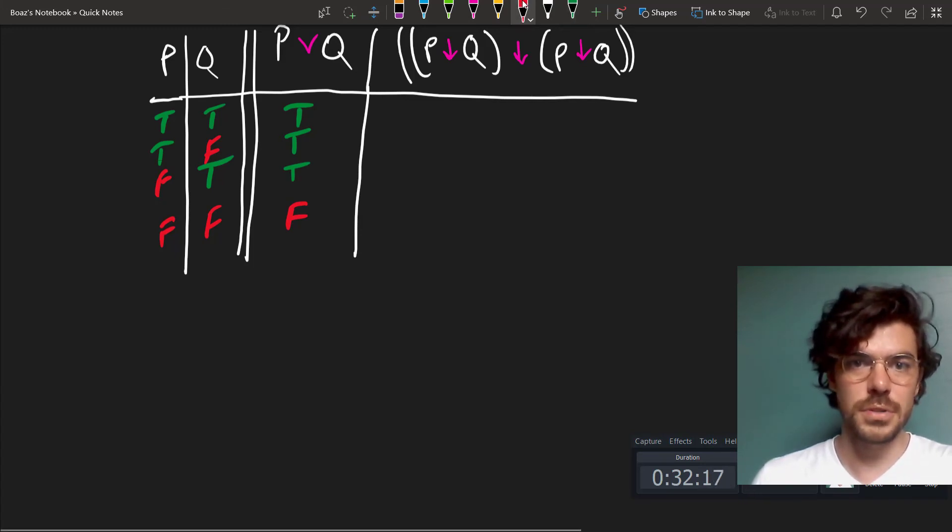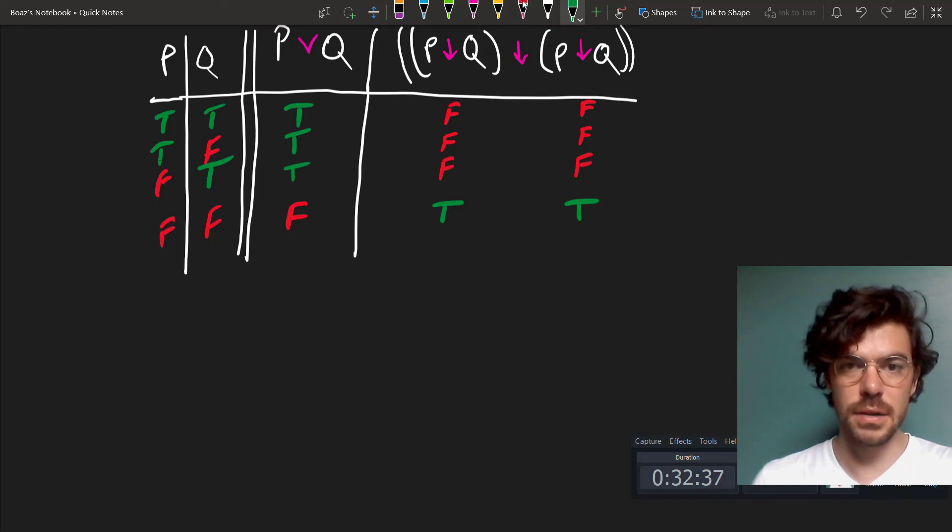So neither p nor q will be false where they're both true, and false where one of them is true, but true where they're both false. And this will be the same on both sides. But then our main connective in the middle here will be true in all instances in which both of them are false. So it flips these.